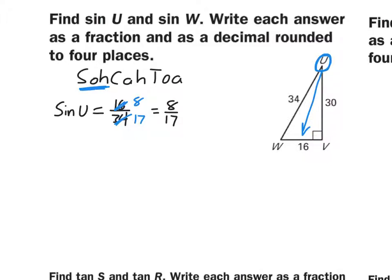They also want it as a decimal. In your calculator, take eight divided by seventeen. Rounding to four decimal places, we get 0.4706. So the sine of angle U is exactly eight seventeenths or approximately 0.4706.